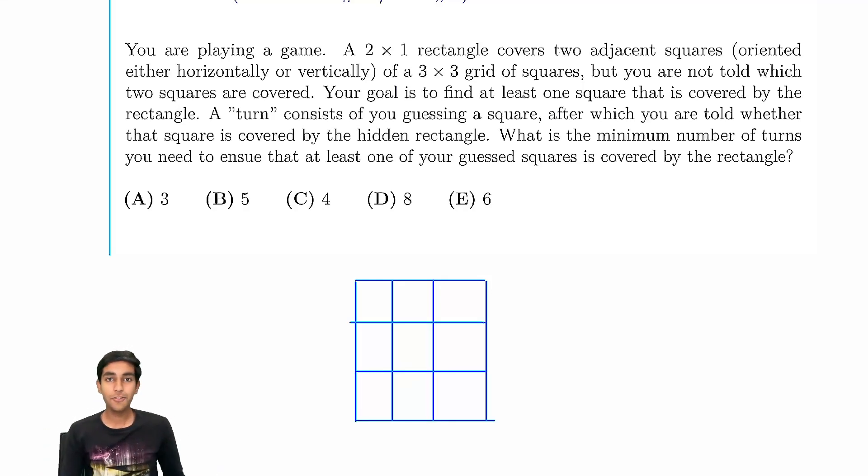Let's learn how to solve this tricky rectangle problem. We're playing a game, and a 2x1 rectangle covers two adjacent squares, either horizontally or vertically, so like this, a domino basically.